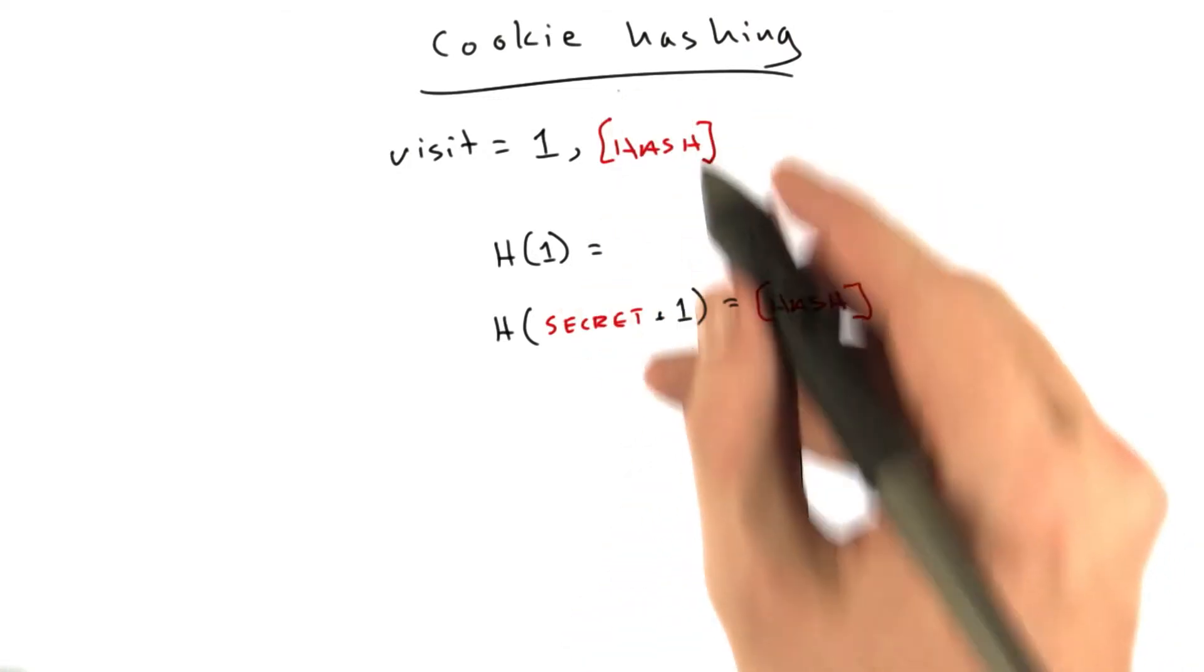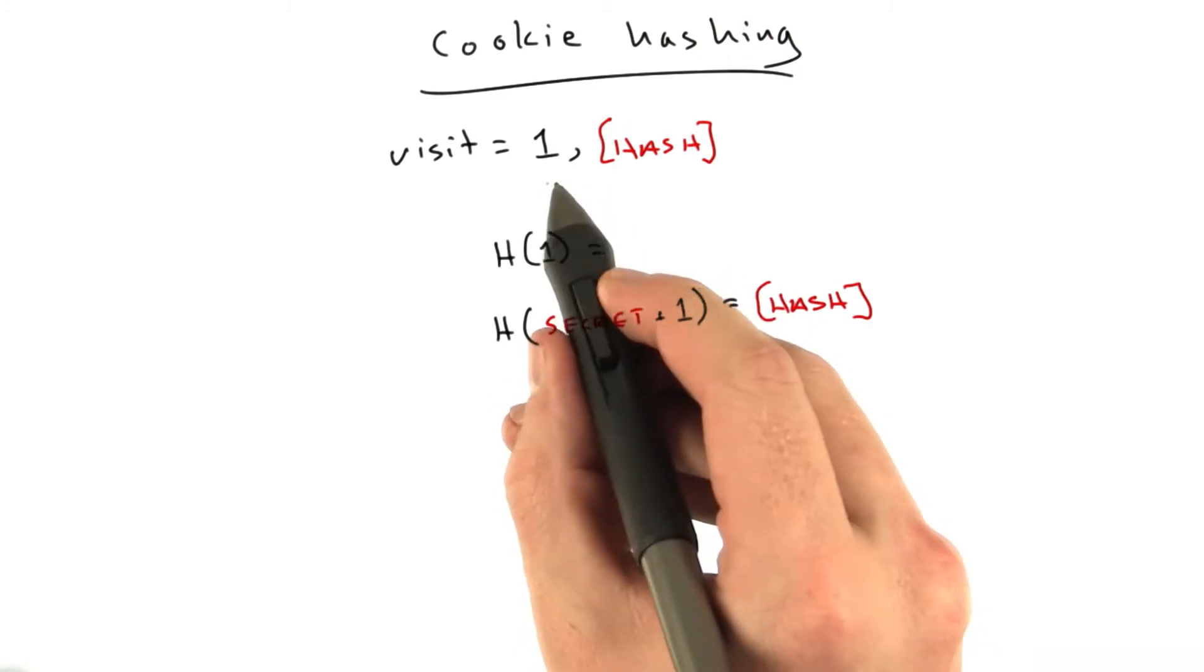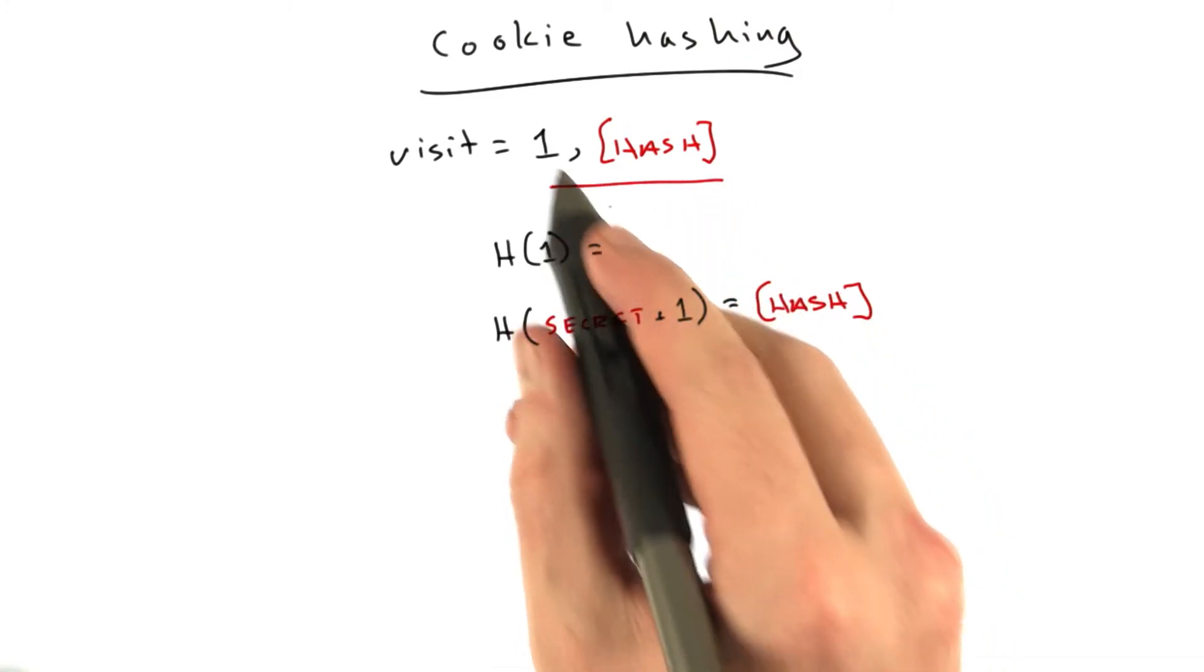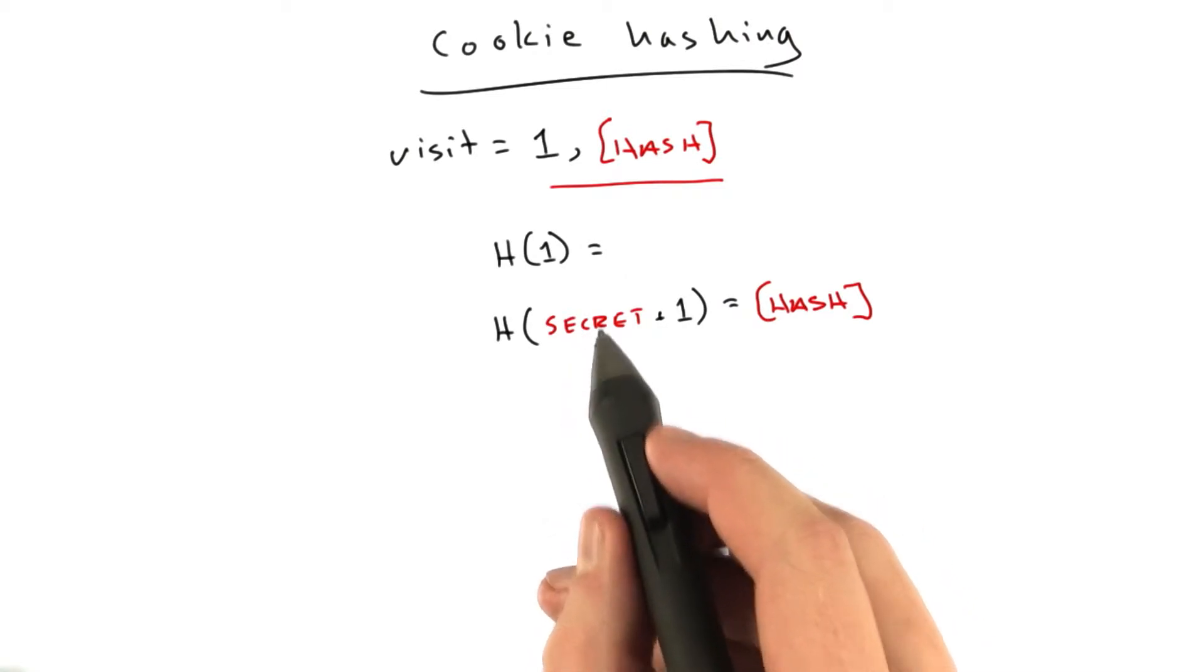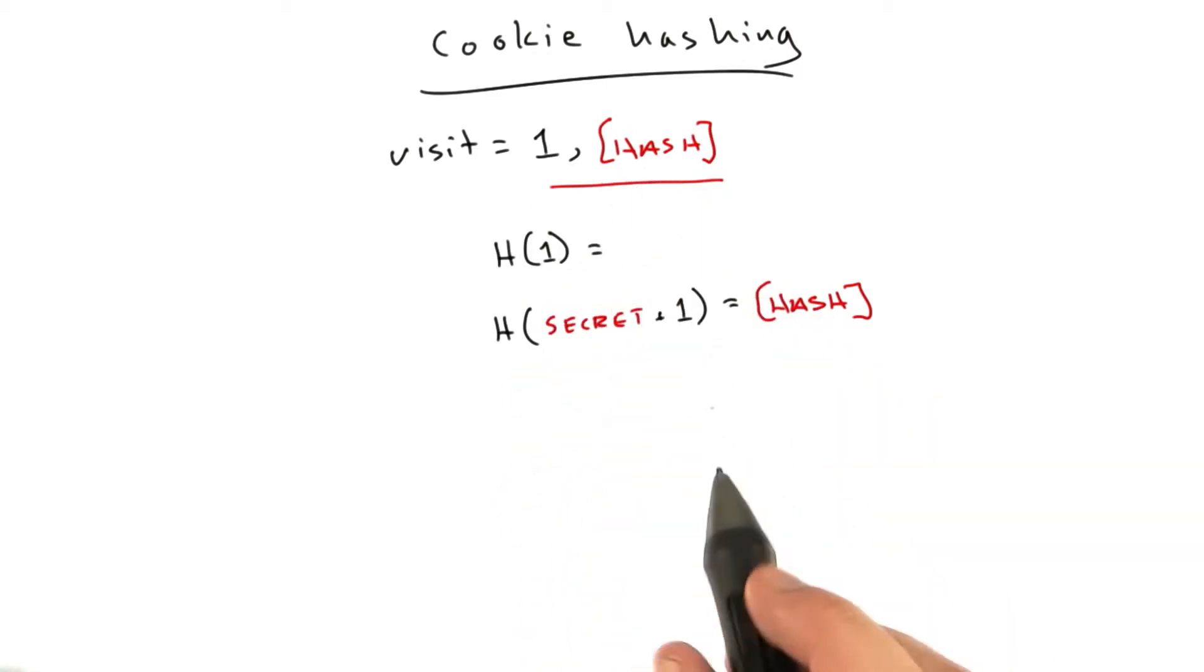So, they'll see in our cookie, the browser will still see a cookie that looks like this, but instead of hashing this 1, we added an extra little secret. And as long as the attacker doesn't know the secret, they won't be able to generate the same hash.